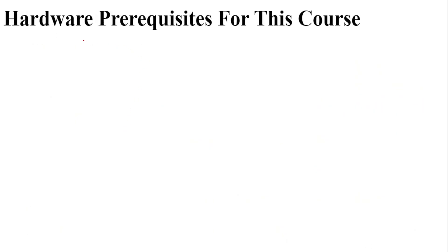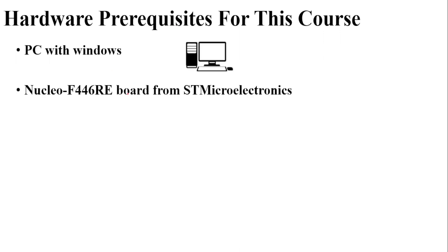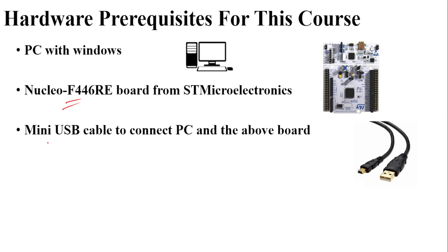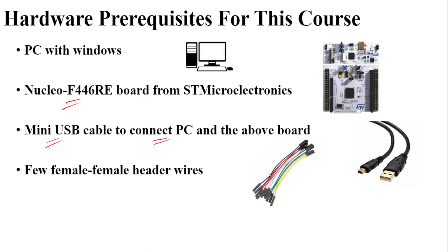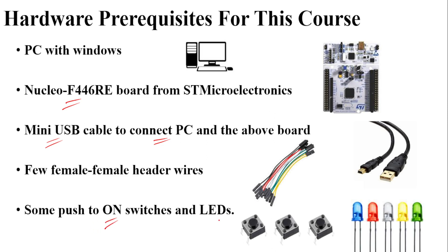Let us see what hardware prerequisites are required to cover this course. First of all we will require a PC with Windows operating system. We will require the Nucleo F446RE microcontroller board, then a mini USB cable which can be connected to the PC and the microcontroller board. We may also require some female-to-female or male-to-male or male-to-female DuPont wires, some push-to-on switches or buttons, and a few LEDs, to understand different functionalities in the upcoming videos.